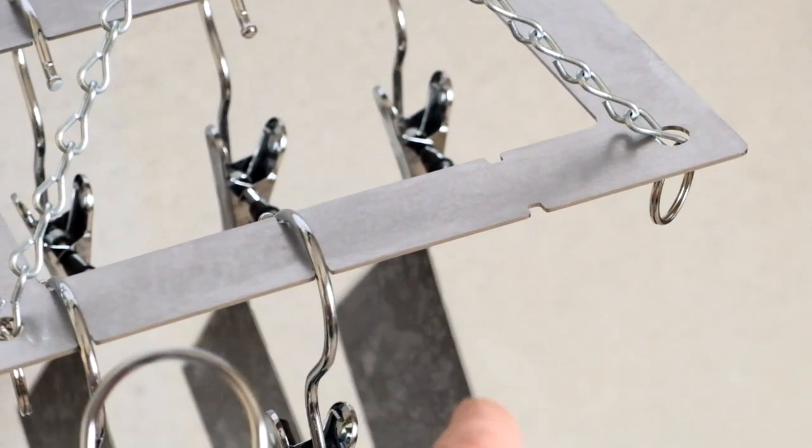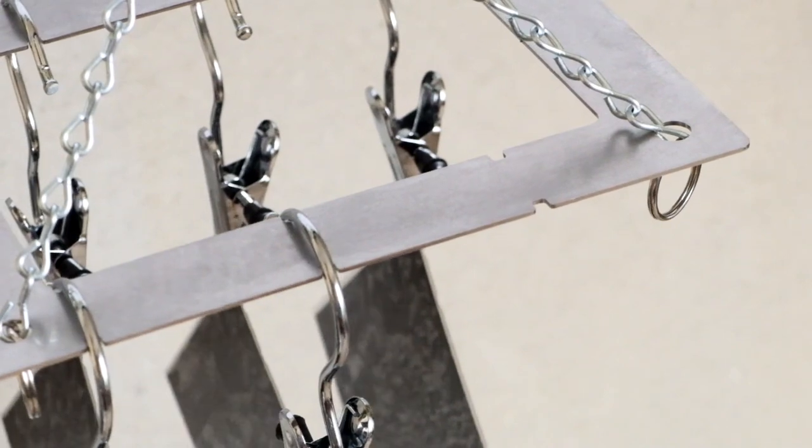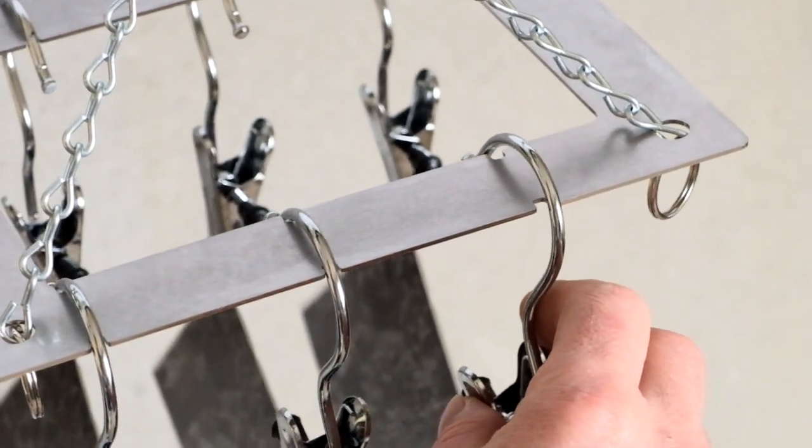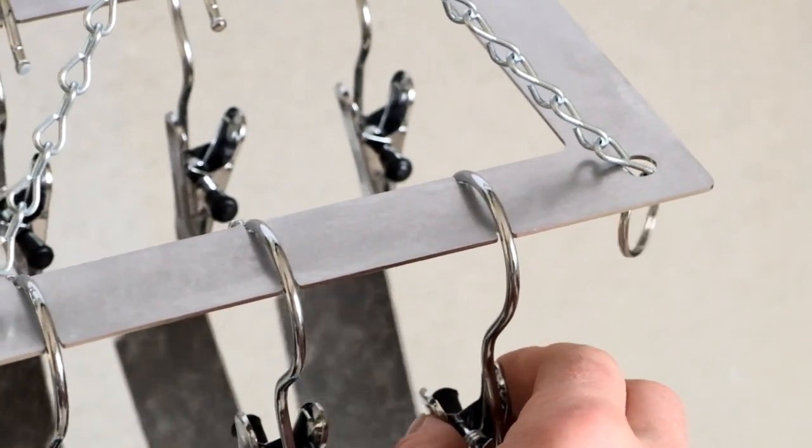The hangers then sit on the rack in notches. This stops them from rotating, which is a problem I found on the mini-laundry racks.